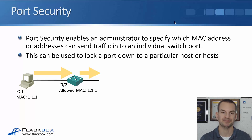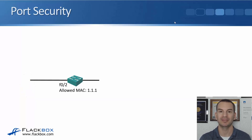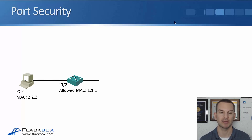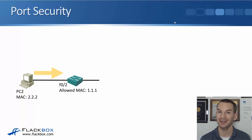If somebody comes along and wants to connect into the network and they disconnect PC1 and plug a different PC into the same cable, it's going to have a different MAC address. This one has MAC address 2.2.2. They then send traffic into the network — it comes in with a source MAC of 2.2.2, which is not the allowed MAC address of 1.1.1, so the switch will drop that traffic.